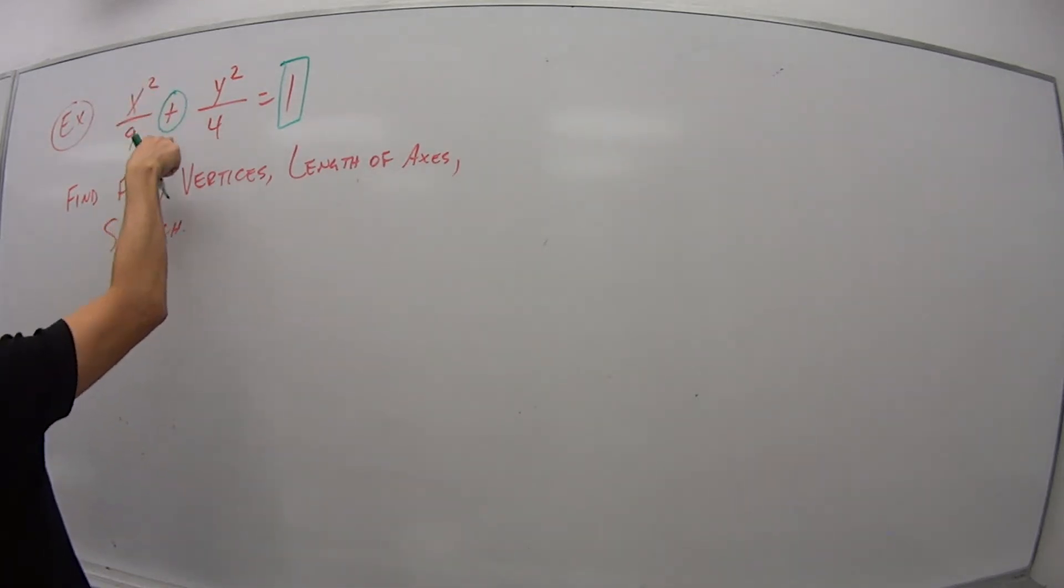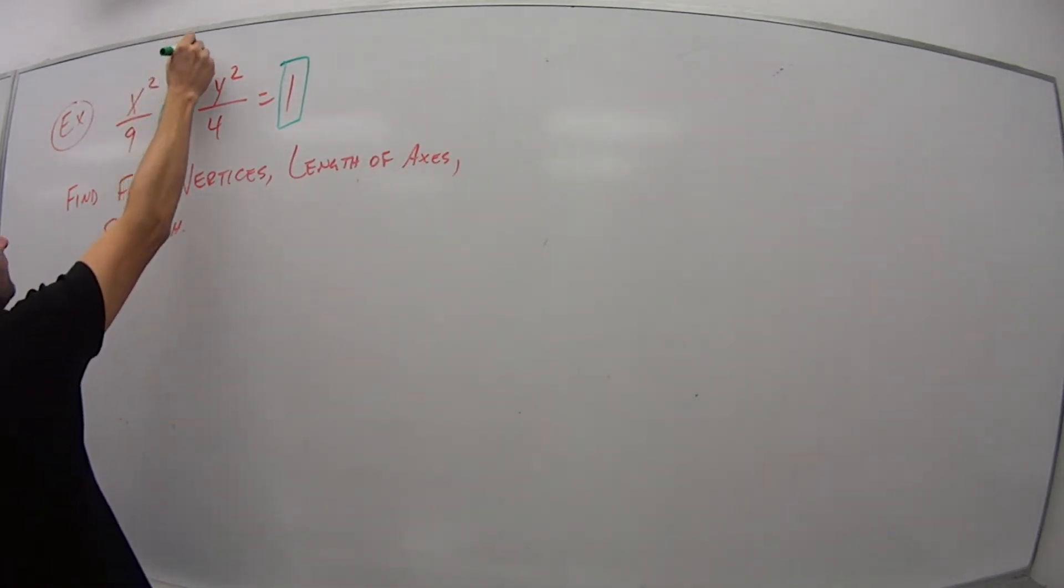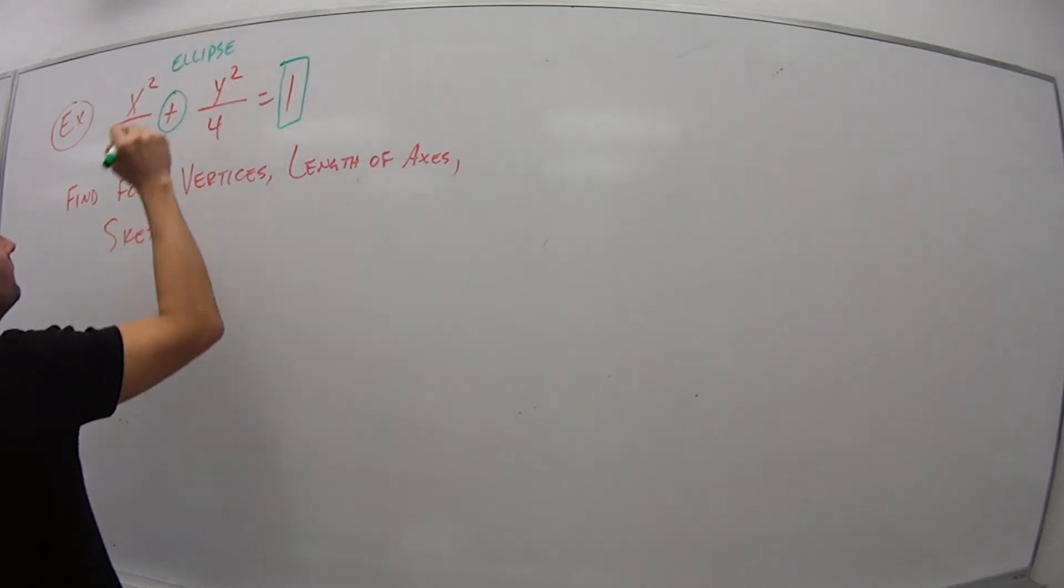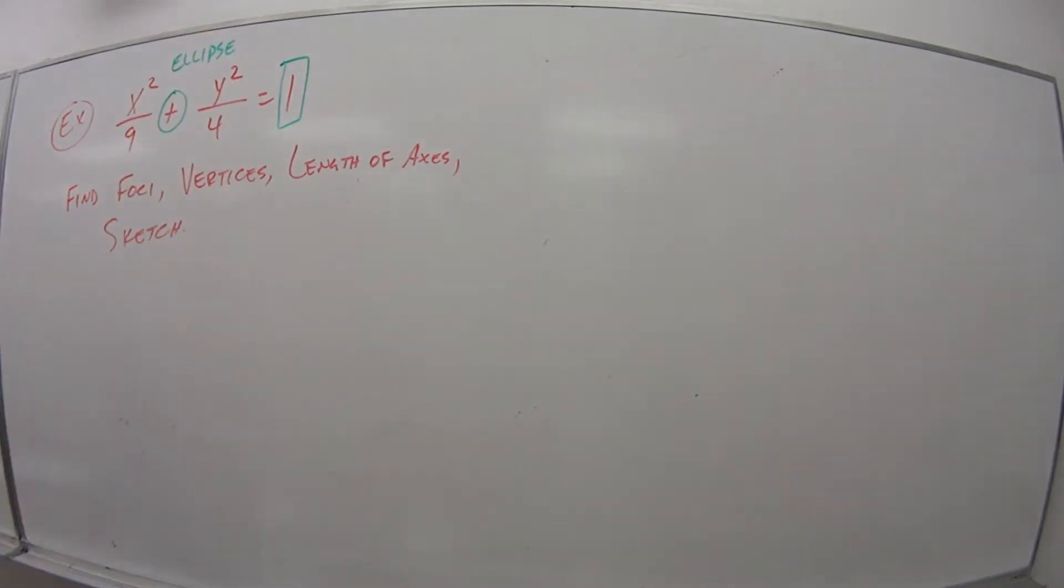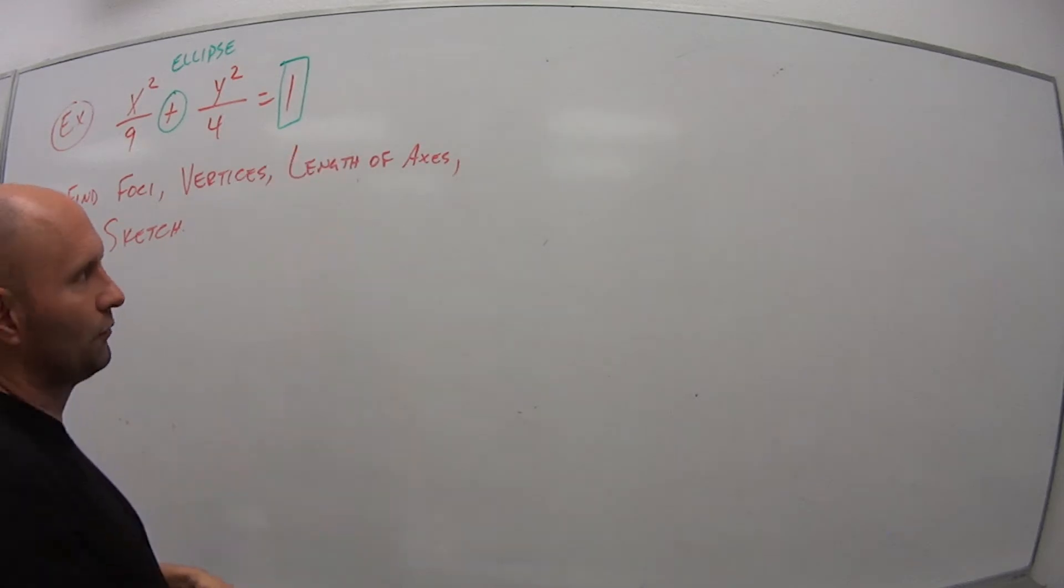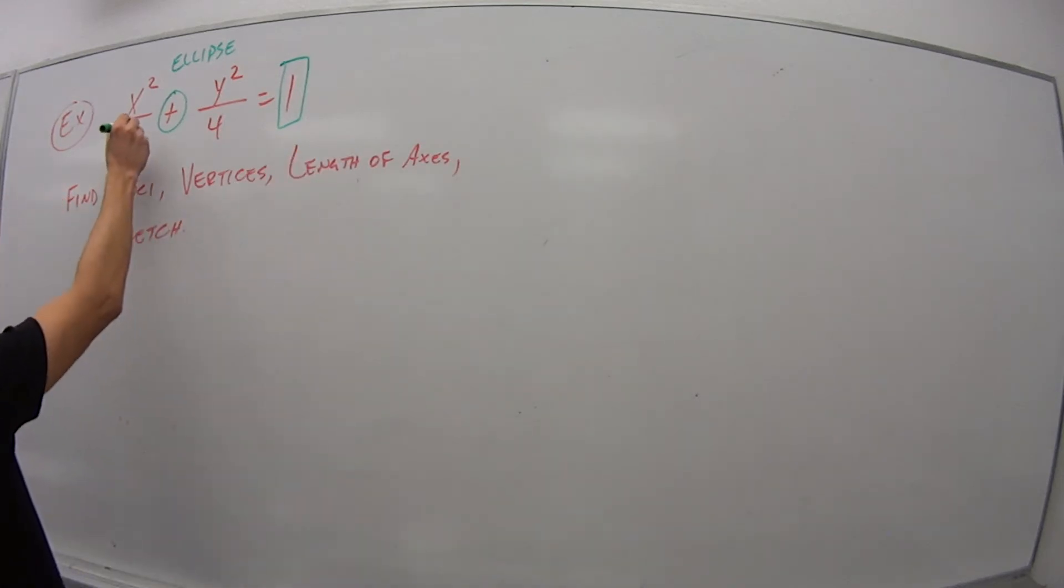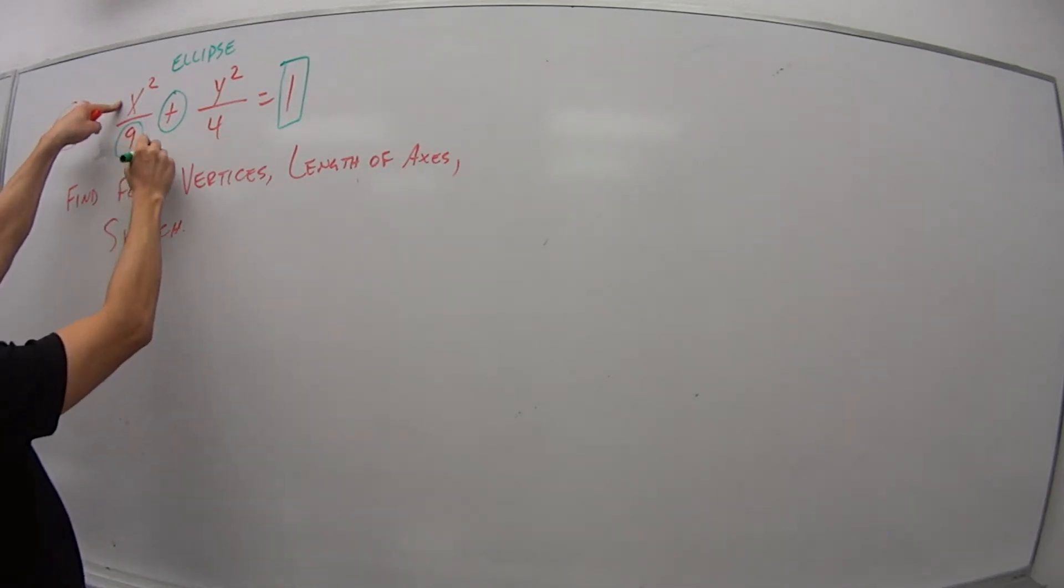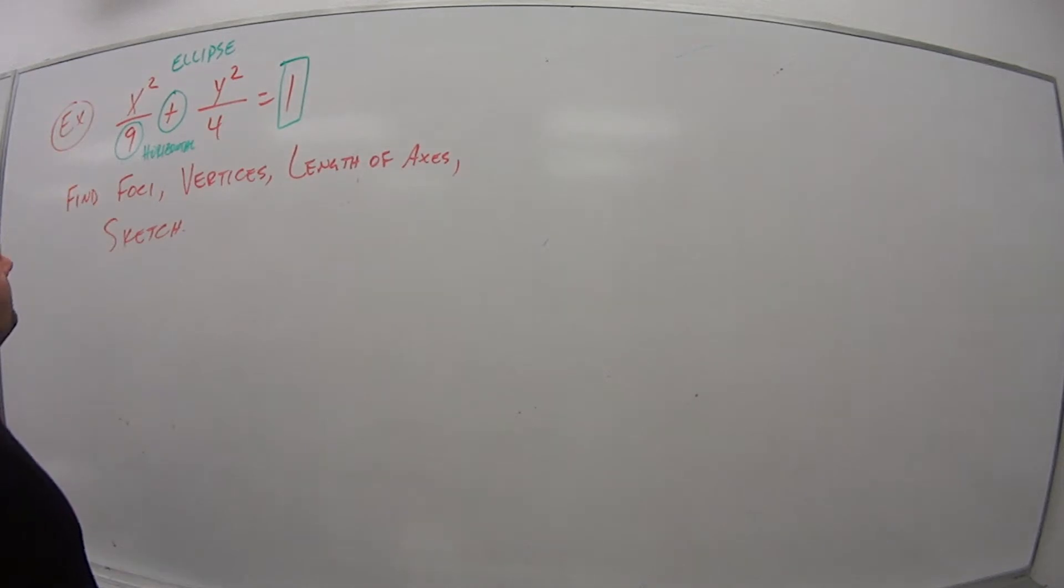Second, we have a plus sign. Plus sign tells me this is an ellipse. Now if it's an ellipse, I need to know if it's horizontal or vertical. I figure that out by where is the bigger number. The bigger number is under the x, so this is a horizontal ellipse. This means my a squared is under the x, and 4 is my b squared.